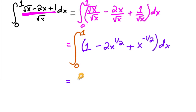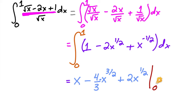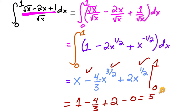Now find the antiderivative: the antiderivative of one is x, minus the antiderivative of x to the one half is x to the three halves times two thirds, but with the two already there that gives four thirds, plus x to the one half times two. Evaluating from zero to one: one minus four thirds plus two, minus zero. Putting everything into thirds: three thirds minus four thirds is negative one third, plus six thirds gives five thirds.